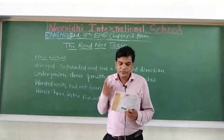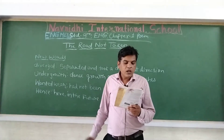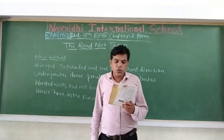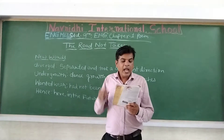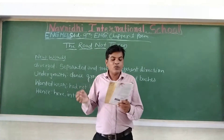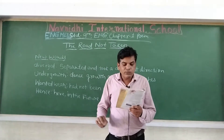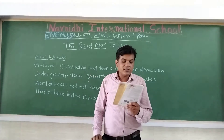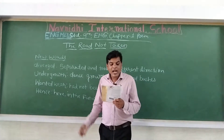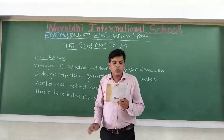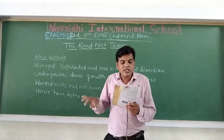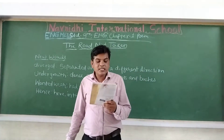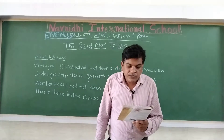Now let us start the poem. I am reading first: 'Two roads diverged in a yellow wood, and sorry I could not travel both. And be one traveler, long I stood, and looked down one as far as I could, to where it bent in the undergrowth.'